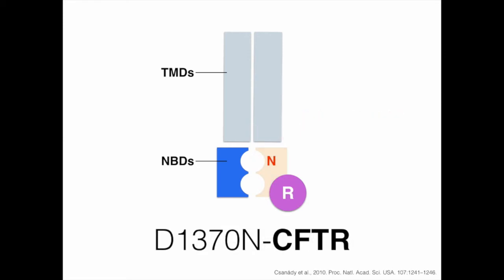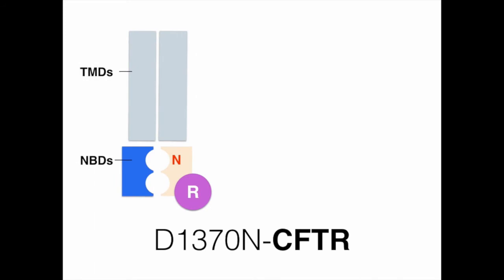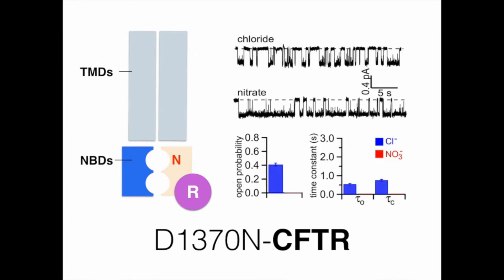It has been shown previously that mutating the conserved aspartate residue at position 1370 abolishes ATP hydrolysis. However, as seen in this slide, nitrate bears nearly identical effects on the gating parameters of D1370N CFTR.